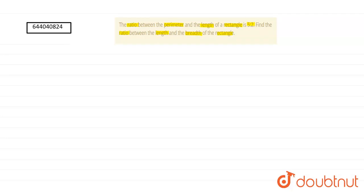So for solving this question, since we know that the formula of perimeter of a rectangle - the perimeter of rectangle is 2 times the sum of its length and breadth, 2(l+b). This is the formula of perimeter of rectangle.